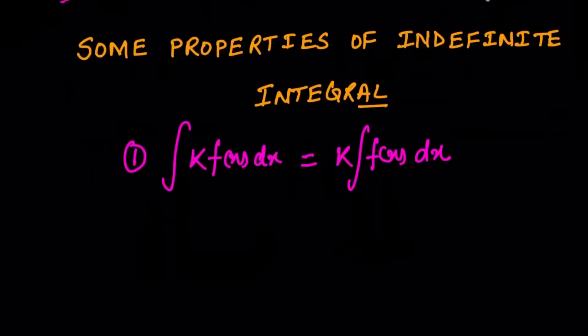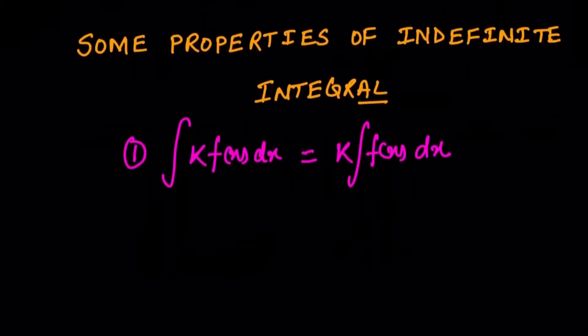Now there are two general theorems on integrals. The first is: whenever a constant is in multiplication with a function, like ∫k·f(x) dx, where k is a constant and f(x) is a function of x, we take k outside the integral. So the result is k·∫f(x) dx. Whenever a constant multiplies an integral, we take that constant outside and integrate the function.